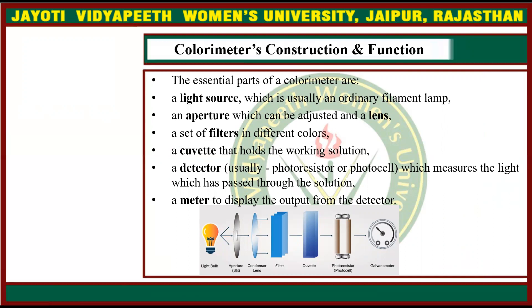The essential parts of the colorimeter are: first, a light source, which is usually an ordinary filament lamp; an aperture which can be adjusted, and a lens; a set of filters in different colors; a cuvette that holds the working solution; and a detector, usually a photoresistor or photocell, which measures the light that has passed through the solution, and a meter to display the output from the detector.